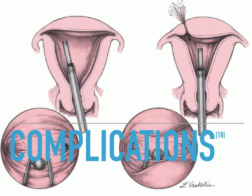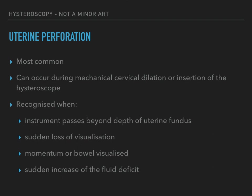Complications from hysteroscopy are rare. One multicenter study of 92 centers and over 21,000 operative hysteroscopic procedures reported a complication rate of only 0.22%. The most common complication was perforation of the uterus, followed by fluid overload, intraoperative hemorrhage, bowel and bladder injury, and endomyometritis. Uterine perforation can occur during mechanical cervical dilation or insertion of the hysteroscope. Such a perforation may be recognized when an instrument passes beyond the depth of the uterine fundus, when there is sudden loss of visualization, when omentum, bowel, or peritoneal structures can be visualized, or when there is a sudden increase in the fluid deficit.